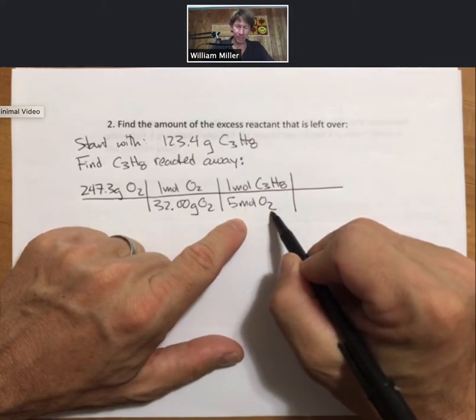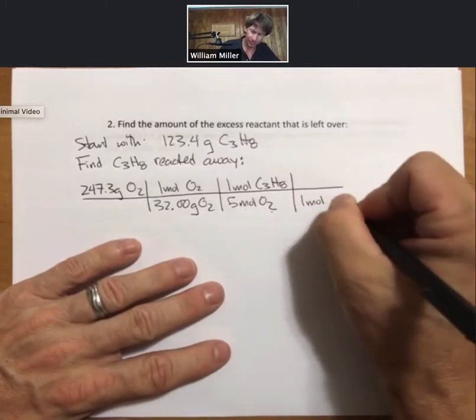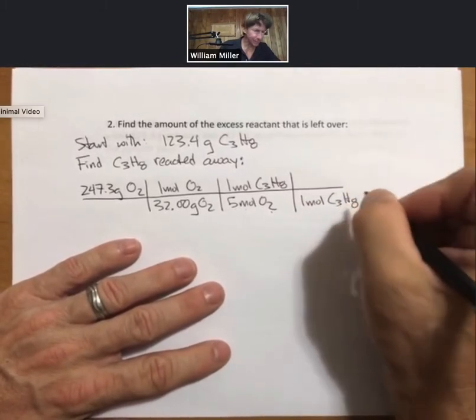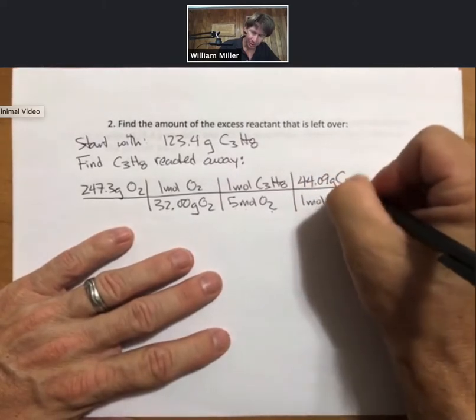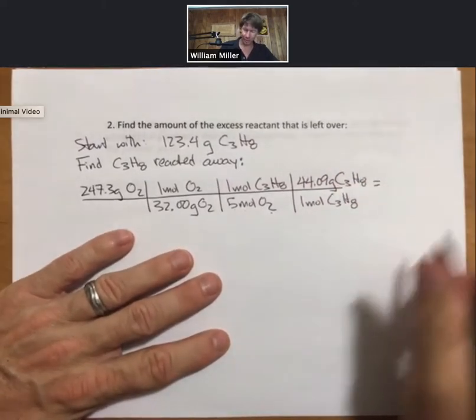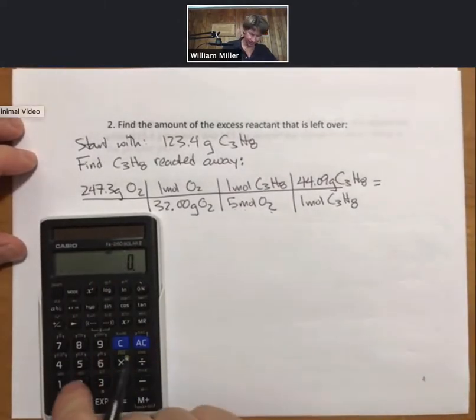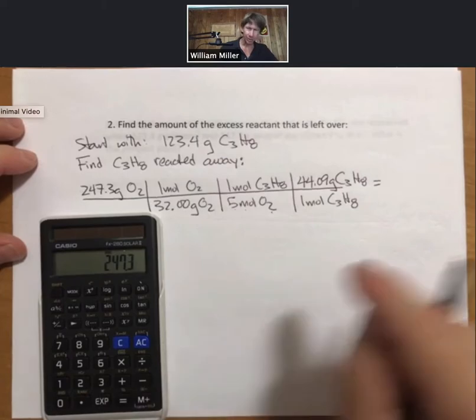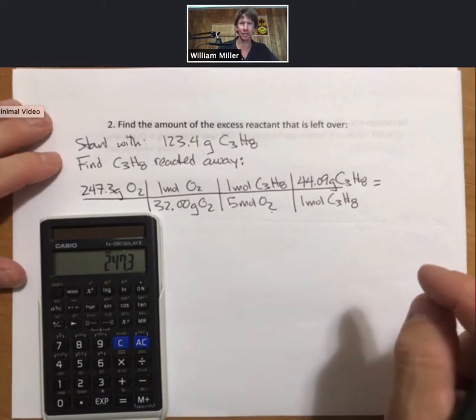So this is again our mole-to-mole ratio conversion factor using coefficients. It says that for every five moles of oxygen that are reacted away, one mole of propane is also reacted away. And for propane, we already used its molar mass, 44.09. Now we're ready to rock and roll. Or, as I like to say, as a chemical engineer, plug and chug. Plug the numbers into my calculator and chug along the train tracks to the answer.